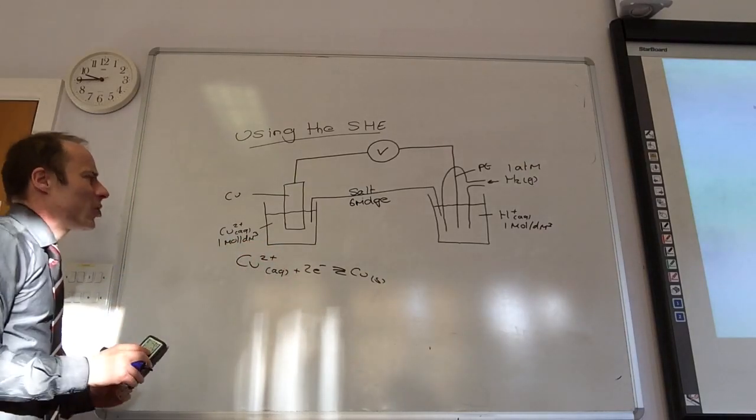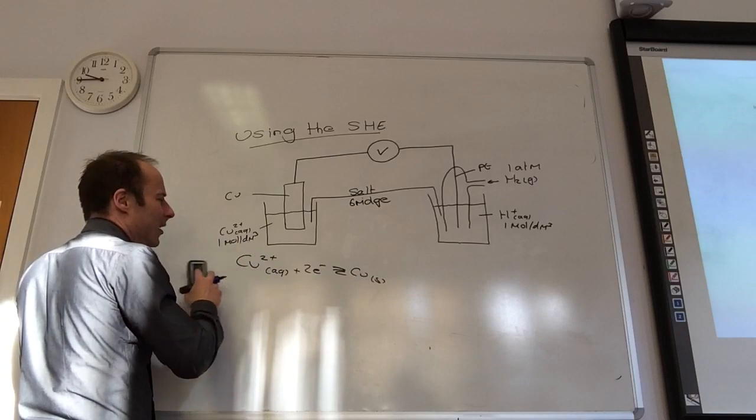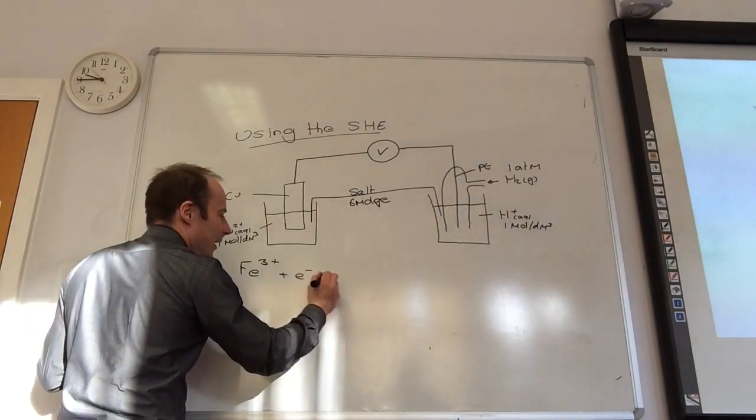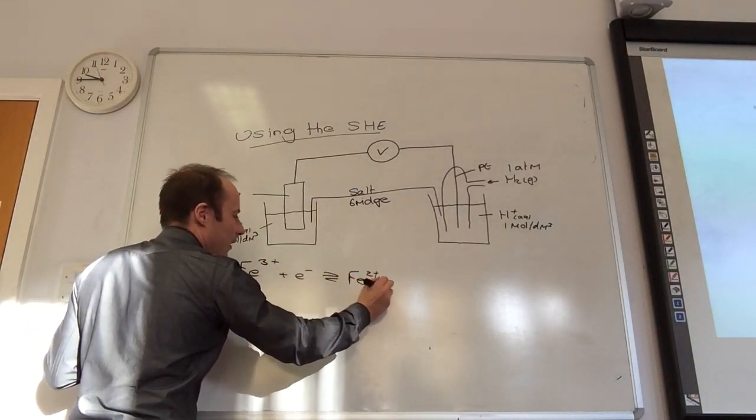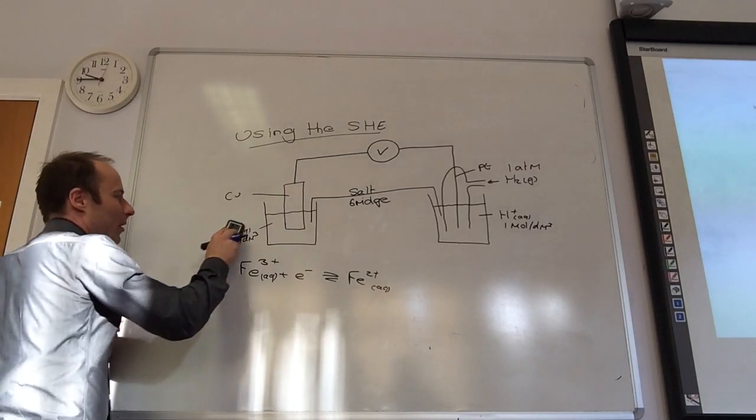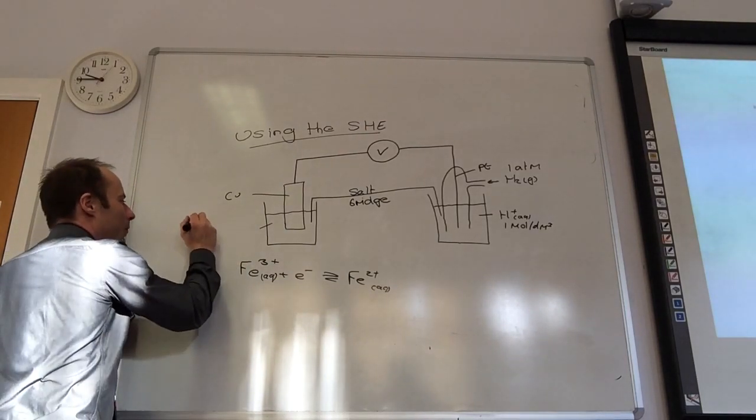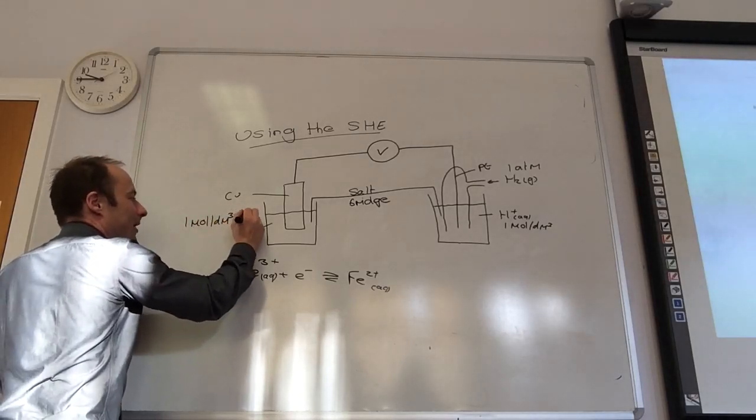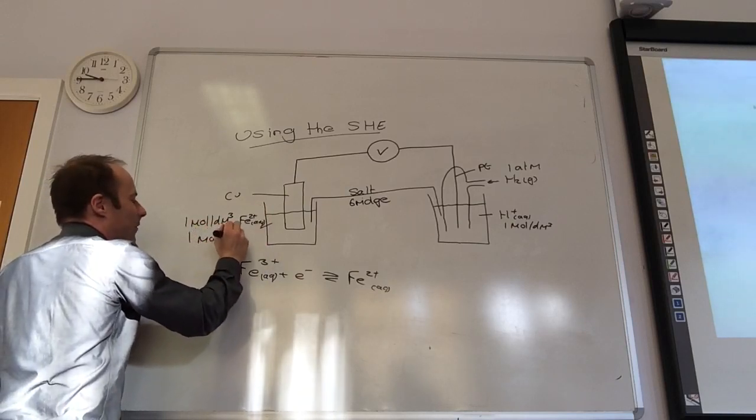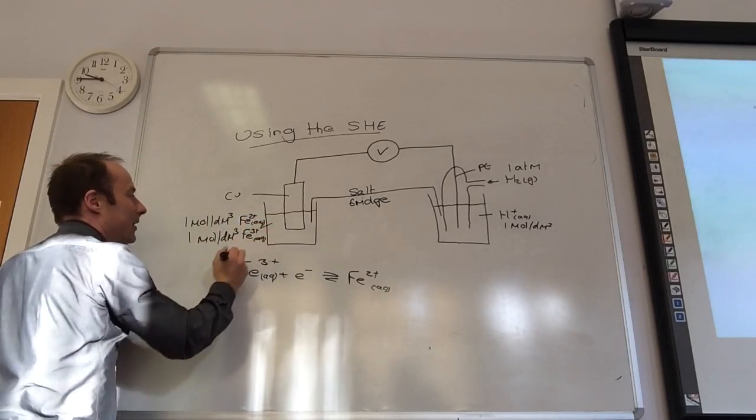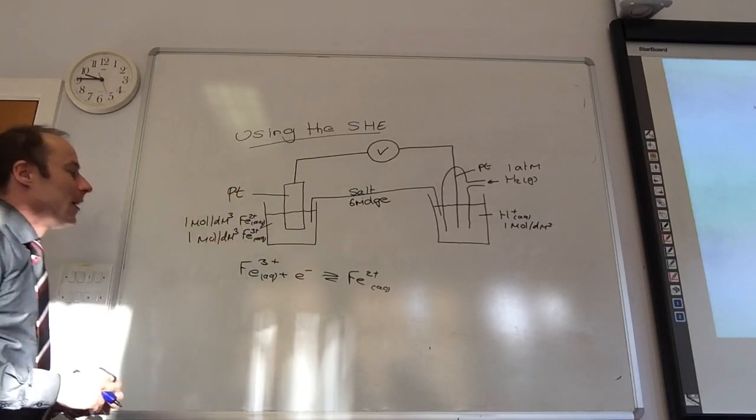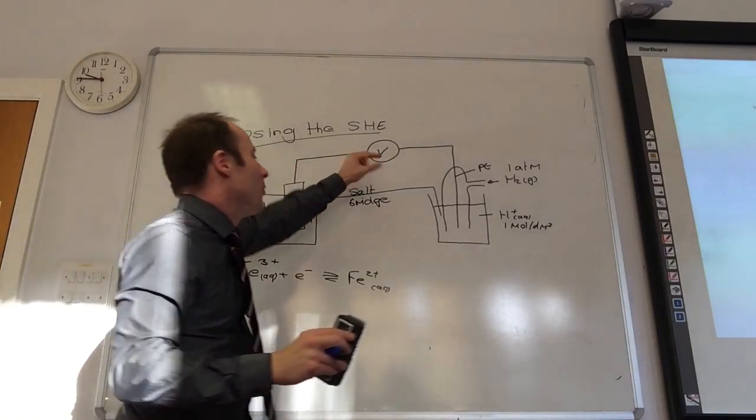Let's say I wanted to change it. I'm going to keep this and now measure this one here: Fe³⁺ + e⁻ ⇌ Fe²⁺, and they're all aqueous. How do I need to change this? This now has to become one mole per decimeter cubed. That's Fe³⁺ aqueous. What would my copper become? That becomes Fe²⁺ aqueous. Then if I've set that up, whatever my voltmeter reads is due to that.